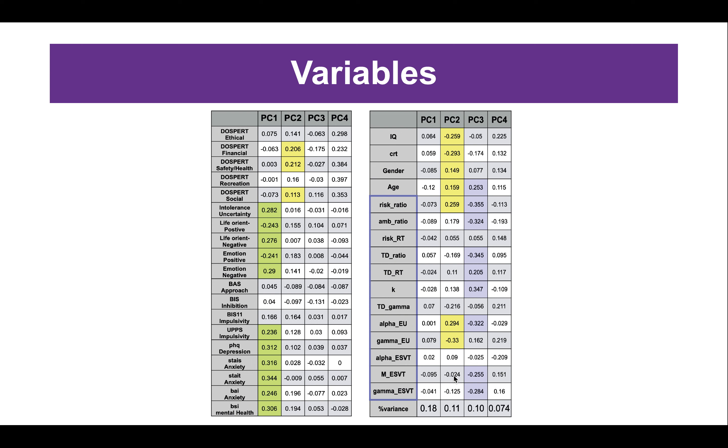This table shows all the behavioral measures we gathered. Here on the left-hand side, it shows all personality traits variables. The table on the right-hand side shows the IQ measures, demographic measures, and all measures we gathered from the lottery choice task.